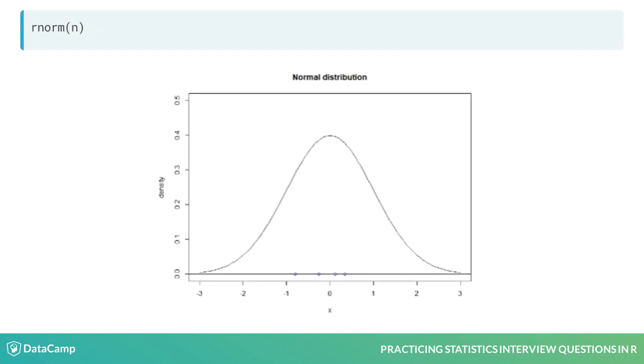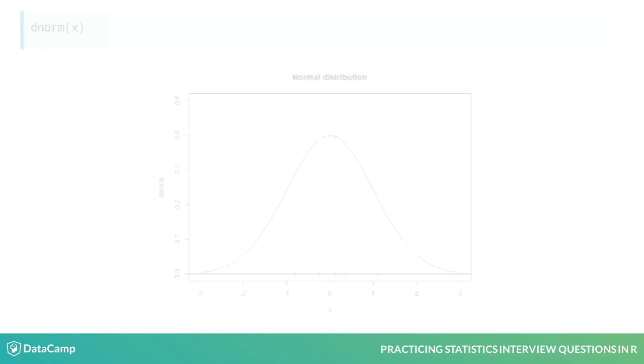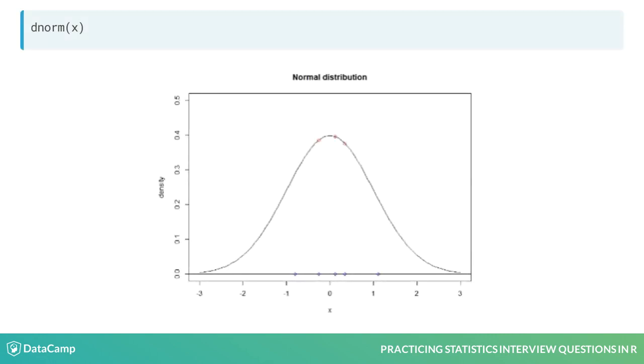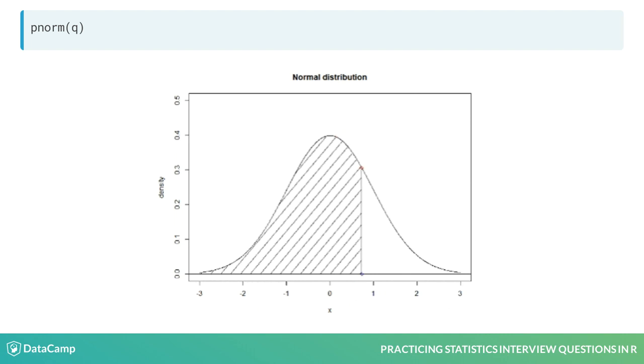In the last video, we discussed the syntax of probability functions in R. Let's take a look at these functions for the normal distribution and see what they return. The rnorm function returns values on the x-axis generated by the normal distribution. These values are the arguments of the density function. The dnorm function returns the values on the density function, and pnorm returns the area under the curve up to a specific point.